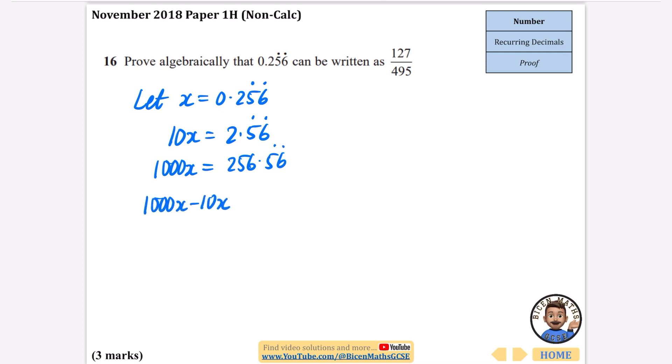When we subtract these, 1000x take away 10x is 256 take away 2, which is 254. That's 990x equals 254, so x is 254 over 990. All we need to do is simplify that by halving the top and bottom. When I half the bottom I get 495, and when I half the top I get 127, which is what they wanted us to do there. This was showing you can do it without writing out all the decimals.